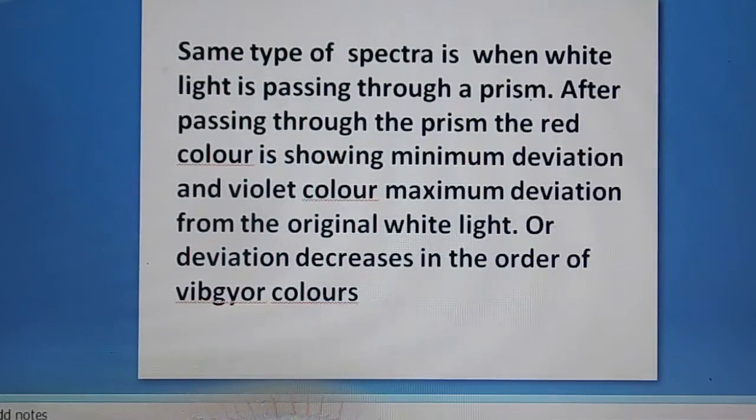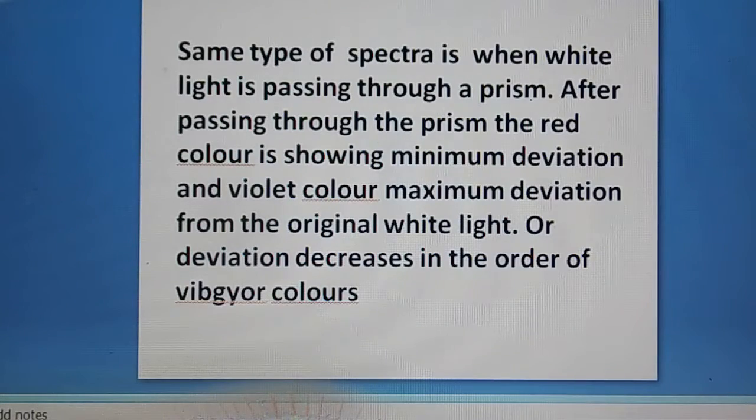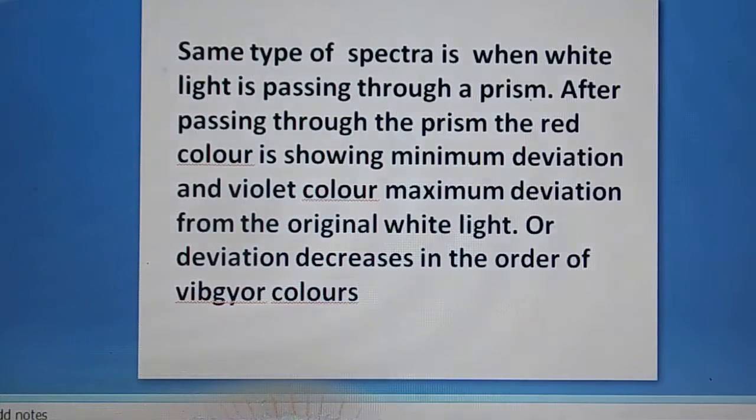When white light is passing through a prism, after passing through the prism, the red color is showing minimum deviation in the case of prism and violet color maximum deviation from the original white light, or deviation decreases in the order of violet minimum and red maximum of the VIBGYOR colors.